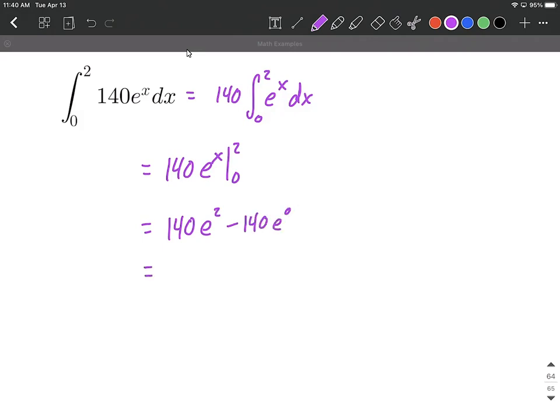Now in evaluating this, we get 140e² minus 140e⁰. E to the zero is the same thing as one, so we could leave this as an exact answer.